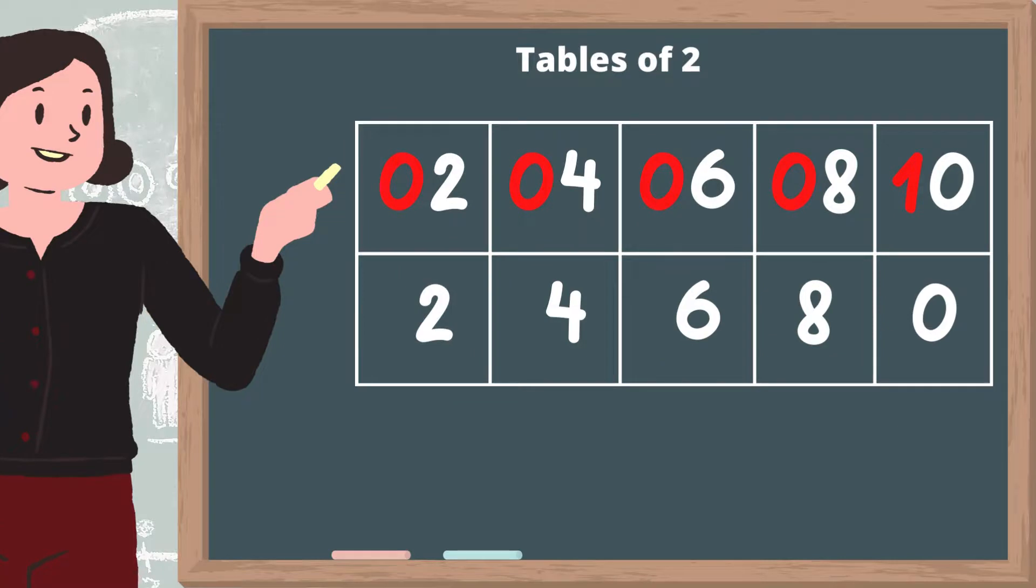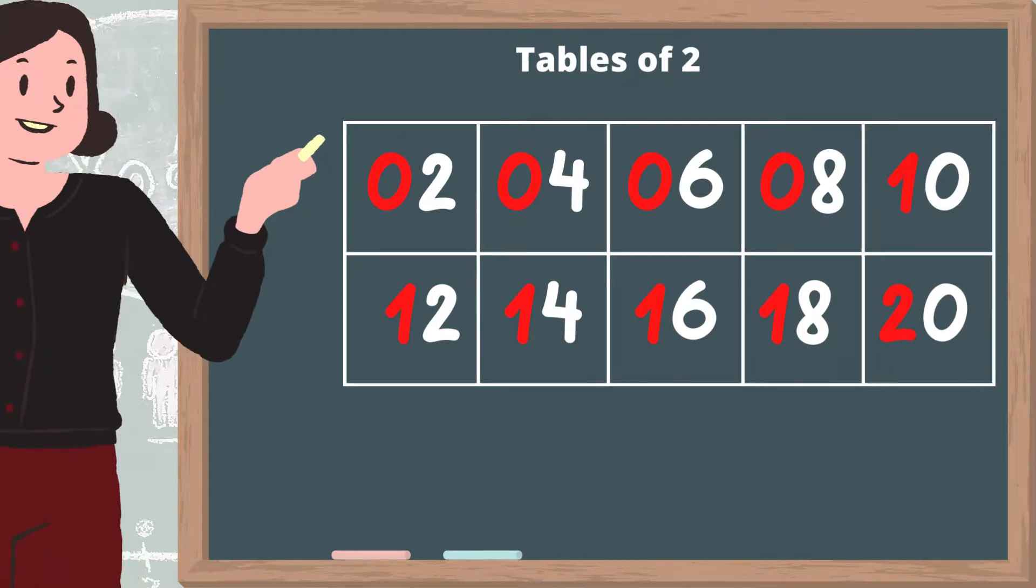Now write zero in the tens digit and remember to add one at the end. Now for the bottom row, write one in the tens digit except the last one, and we will write two in the last box.